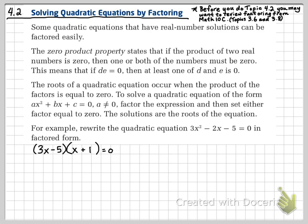This means that either 3x - 5 has to equal zero, or x + 1 is equal to zero. In the first case, if 3x - 5 is equal to zero, we will add 5 to both sides, and then divide both sides by 3. We will find the solution that x is equal to 5/3.